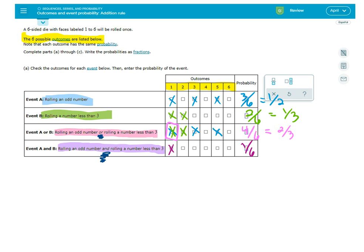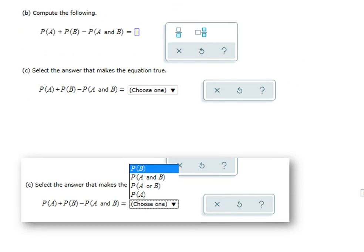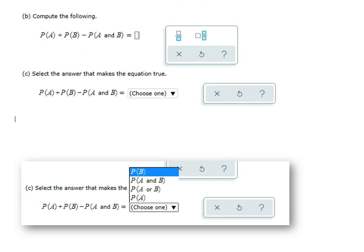So the probability here is one sixth. Now that fills in that part and then it takes you on to the next part. Part B says - whoops, sorry about that - find the probability of A plus the probability of B minus the probability of A and B. I'm going to pause this for a second.